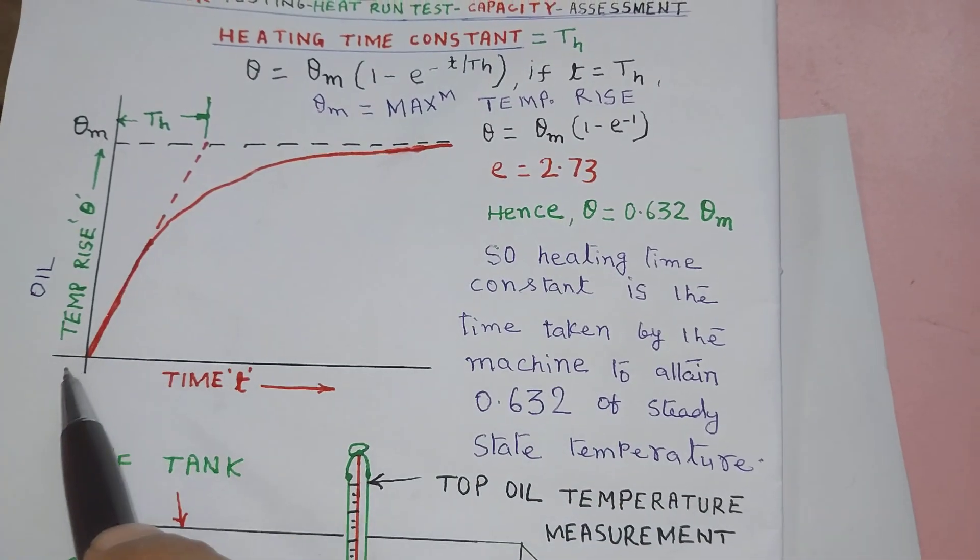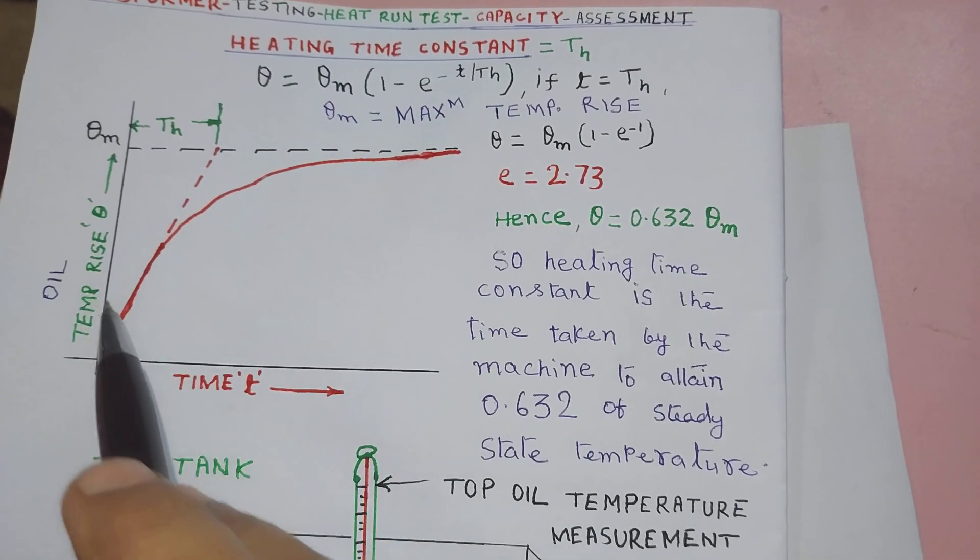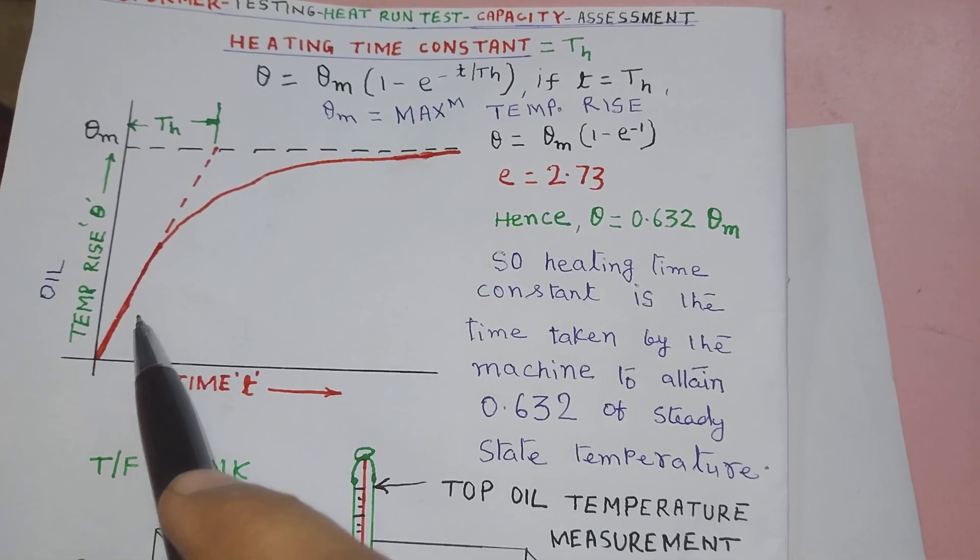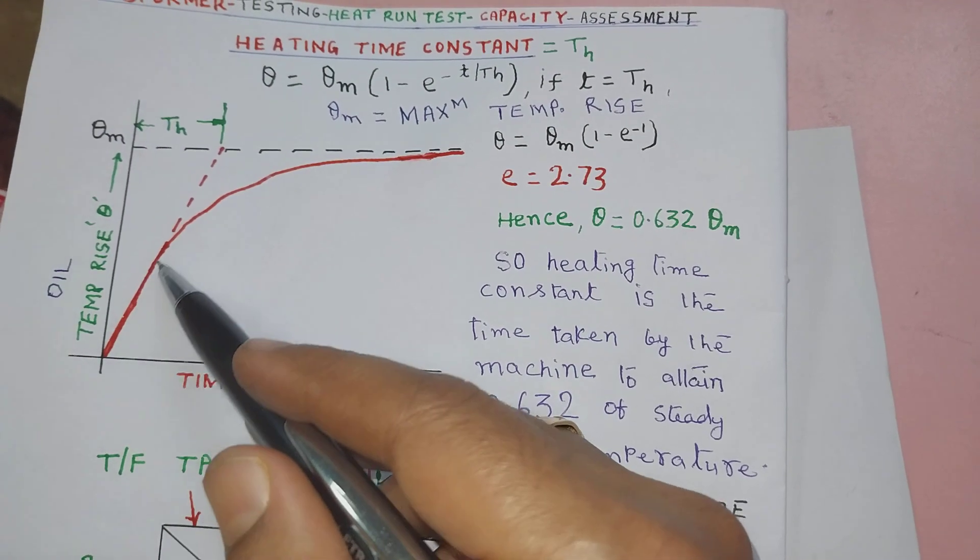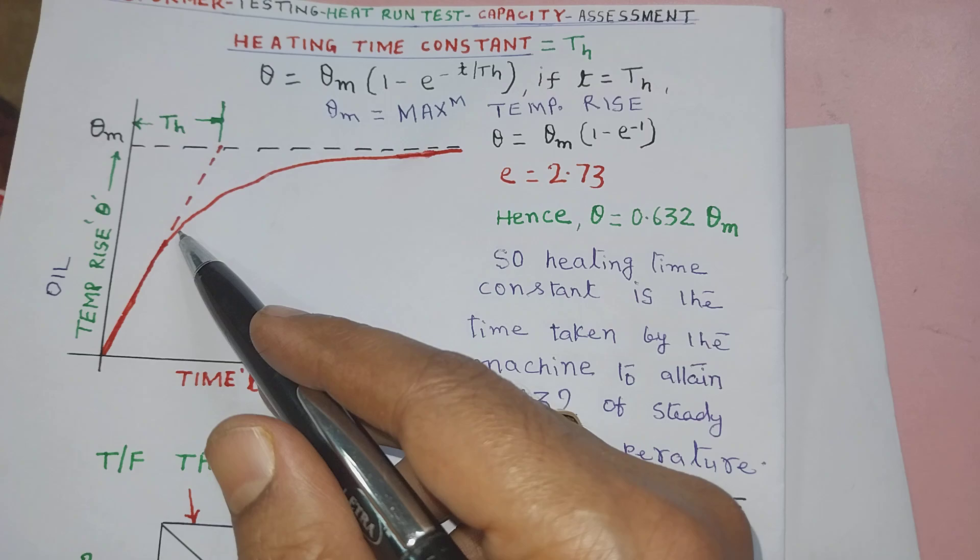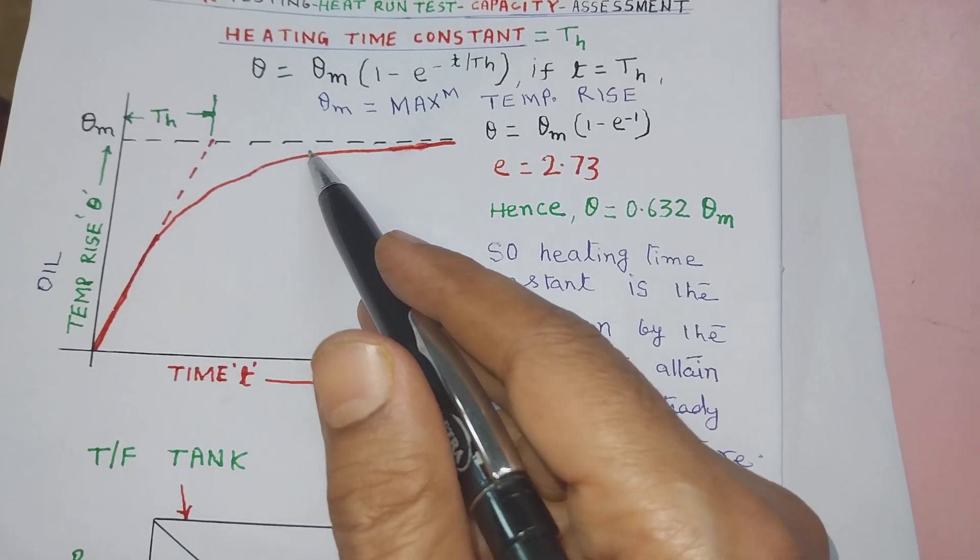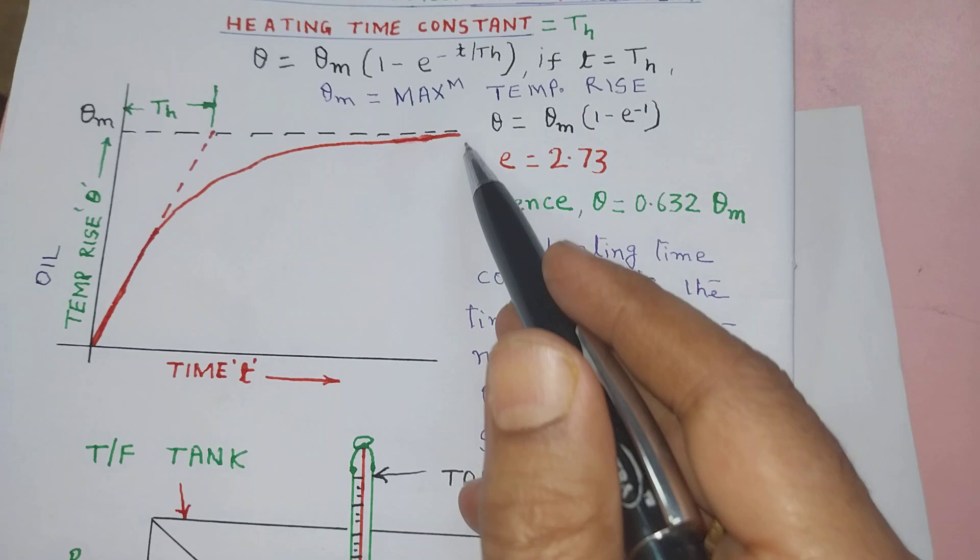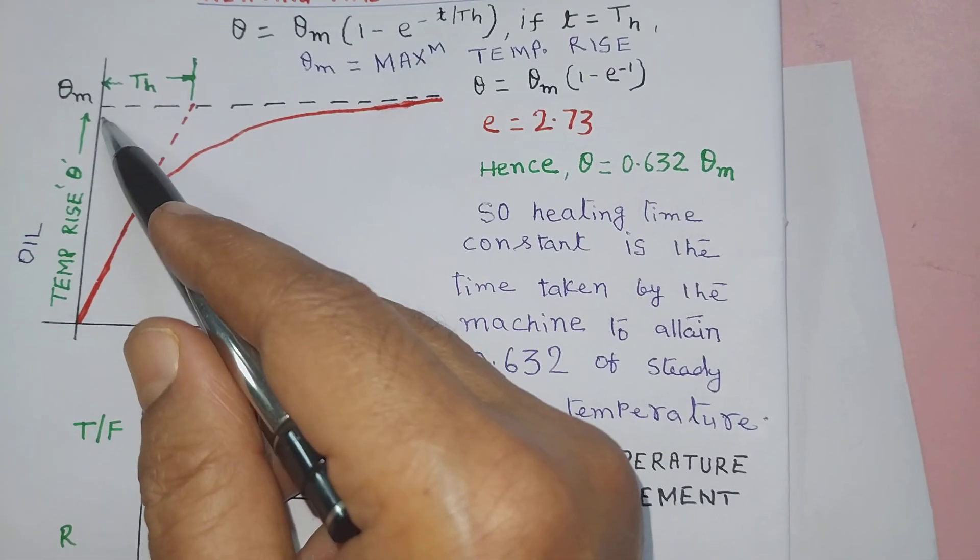Here is a temperature rise versus time curve. You can see at the starting, there is steep rise in temperature and gradually it comes to standstill and the maximum temperature rise is theta m.